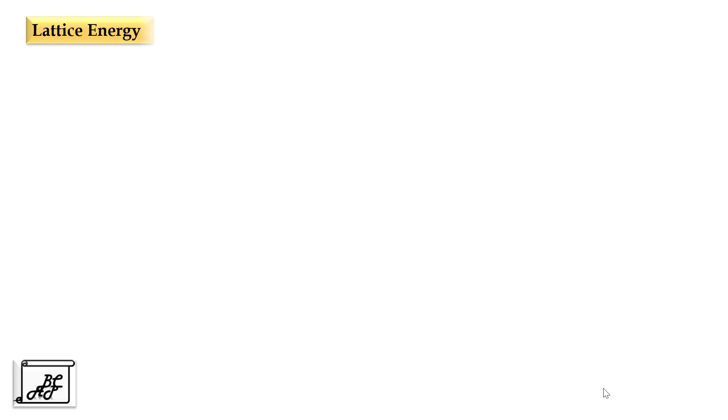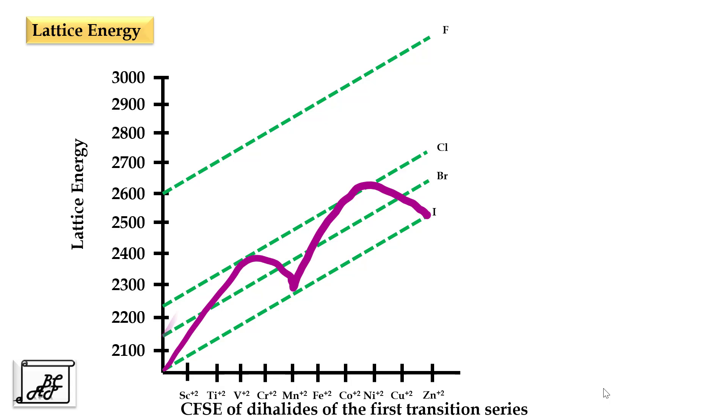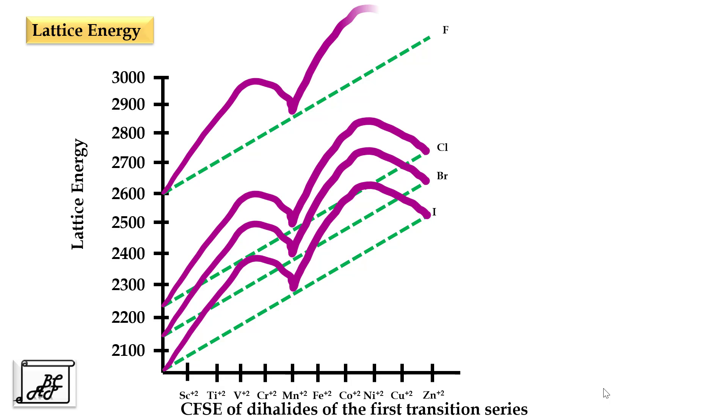Let's move to the lattice energy of transition metal complexes. When we plot the graph of lattice energies of the transition metal complexes versus the CFSE of dihalides of first transition series, we should get straight lines for iodides, bromides, chlorides, and fluorides of transition metals. But instead of getting a straight line we get double humped curve for all the iodides, bromides, chlorides, and fluorides of transition metals.